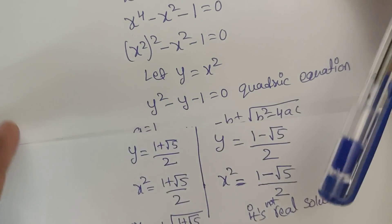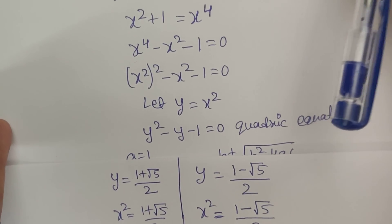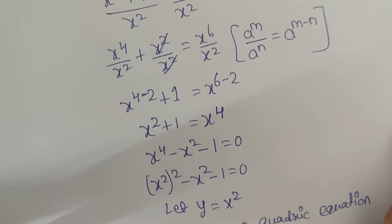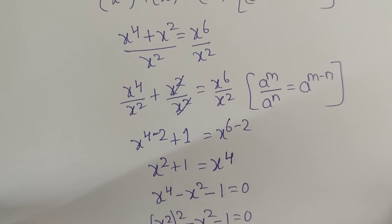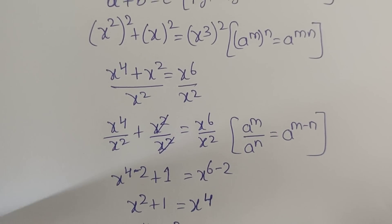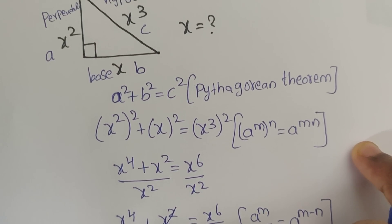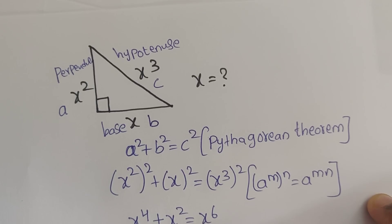So x equals square root of 1 plus square root of 5, divided by 2. This is the positive solution. Please do subscribe for more videos. Thank you and take care. Bye bye. See you in the next video.